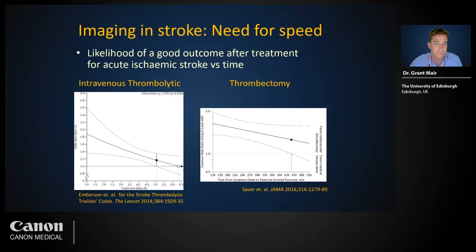These graphics show how the likelihood of benefit after thrombolysis and thrombectomy drops with time elapsed after ischemic stroke onset. The 95% confidence intervals for treatment effect on the odds of a good outcome cross the line of no effect around five hours for thrombolysis and around seven hours for thrombectomy.